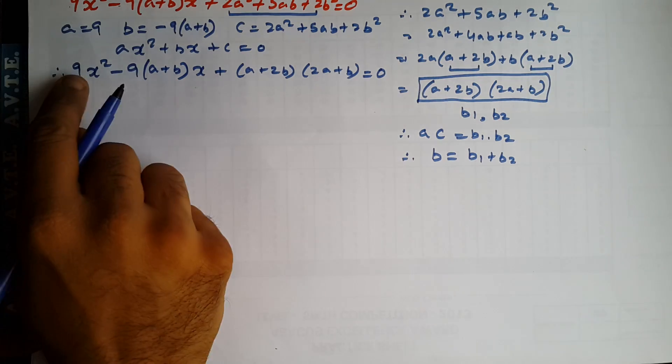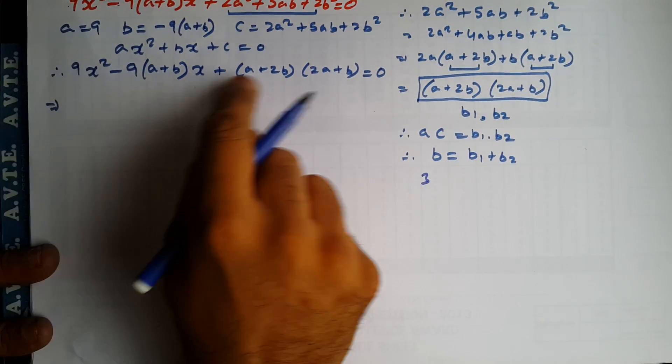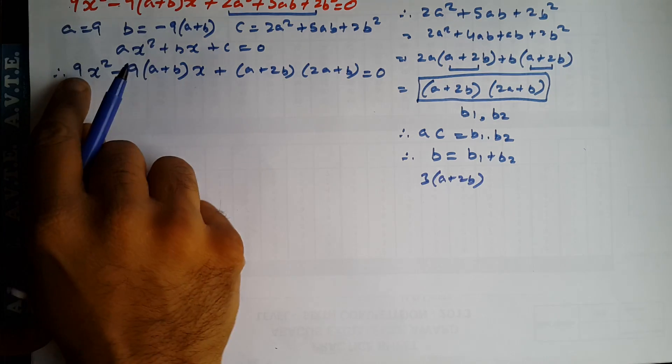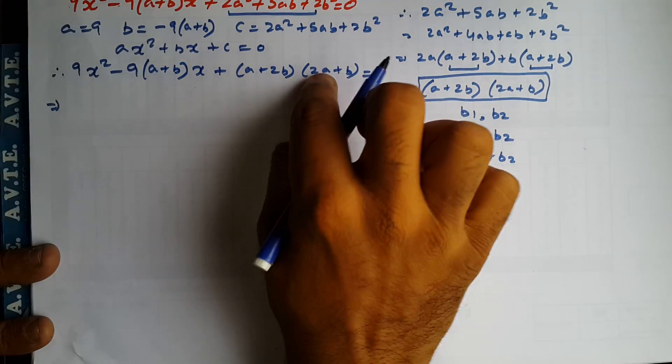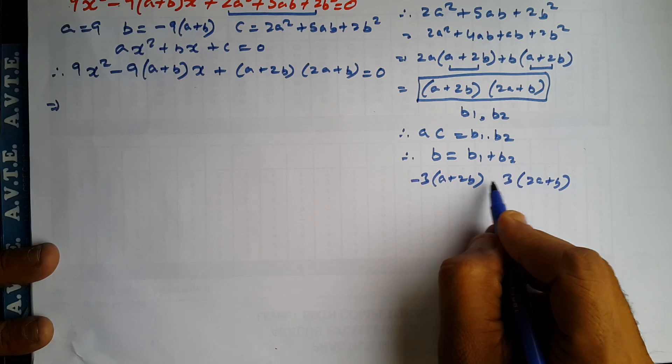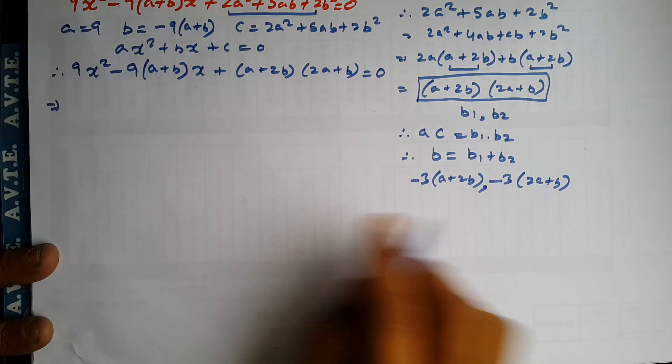The factors are 3A plus 2B and 3A plus B with their minus sign.